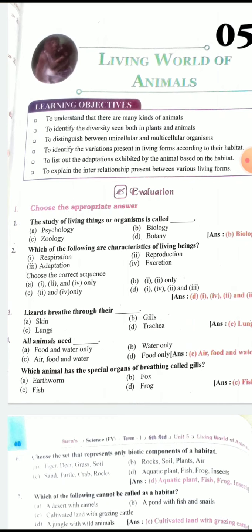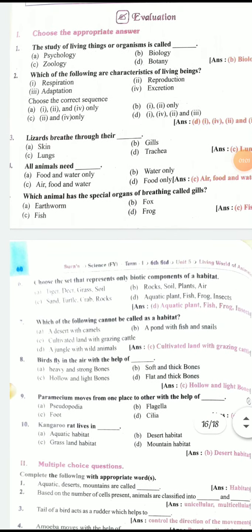Fifth one: Which animal has the special organs of breathing called gills? Fish. Yes.